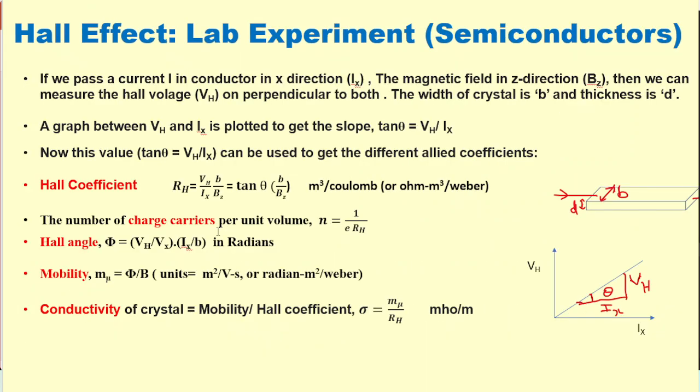In most laboratories we have experiments based on semiconductors like germanium crystal. The Hall effect is basically the deflection of electrons in N type or holes in P type due to external magnetic field. If we measure the Hall voltage, then we plot the Hall voltage versus the current, and using this slope we can find out tan theta, that is the slope of VH by IX, and this slope can be used for calculating different coefficients in this Hall effect experiment.